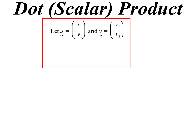Look at this thing called a dot product, sometimes called a scalar product. I've got these two vectors, u and v. So the first one is x1, y1, the next one x2, y2.